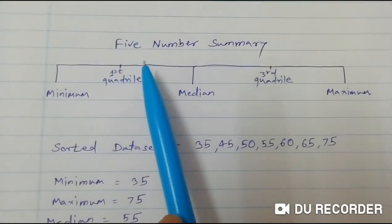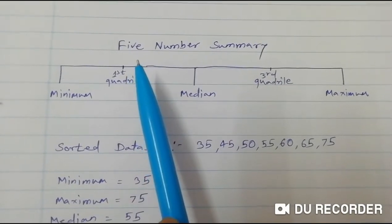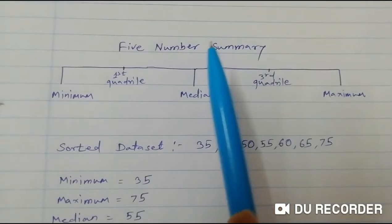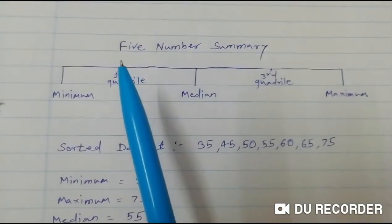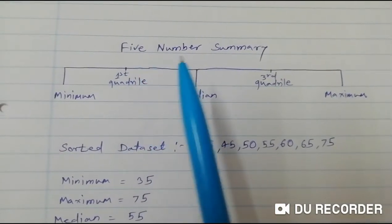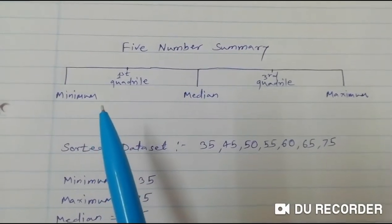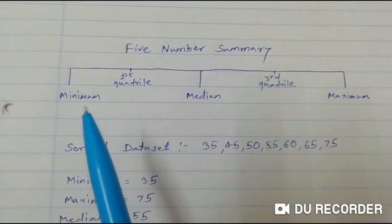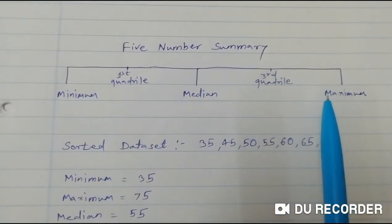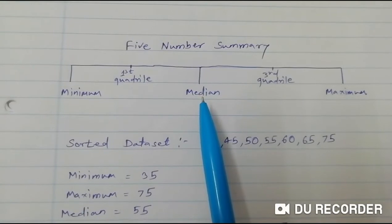Now we will see our last part, which is very important from a statistics point of view — that is called the five number summary. Five number summary means from our given data set we are finding five elements: the first is minimum, second is maximum, third is median, and after that we calculate the first quartile and third quartile.